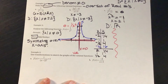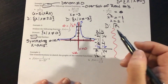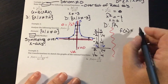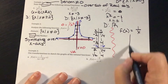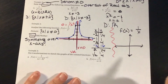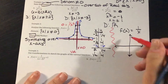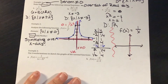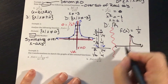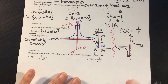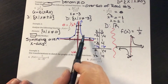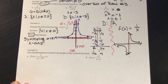A quick review: for f of X equals 1 over X, we also cannot have X equals 0, so there's an asymptote there. This function has one branch in the first and third quadrants, while 1 over X squared has branches in the first and second quadrants.